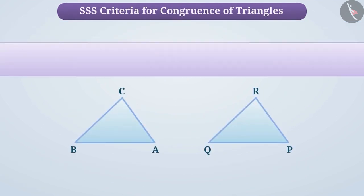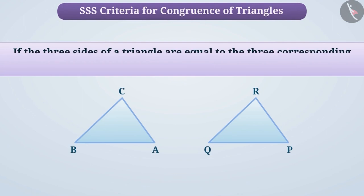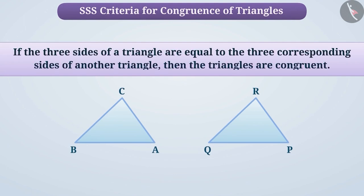Thus, we can say that if the three sides of a triangle are equal to the three corresponding sides of another triangle, then the triangles are congruent.